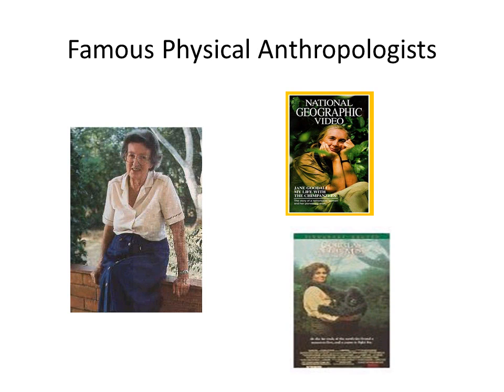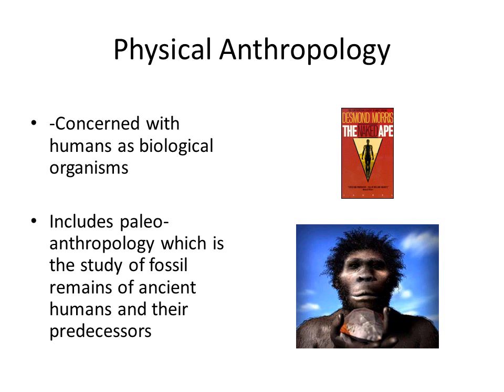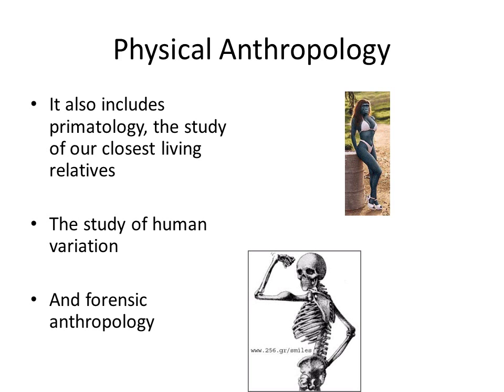Just for your information, the whole first part of our course has to do with physical or biological anthropology. What that really means is that these people — the paleoanthropologists — their whole mission in life is to find evidence for man's evolution. If you were looking for evidence of man's evolution, the answer is Africa. It also includes primatology, the study of our closest living relatives, and we're going to spend some time on primatology. It's also the study of human variation, or how anthropologists look at the whole idea of race. And my personal favorite, it's also the study of forensic anthropology.